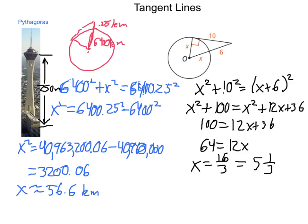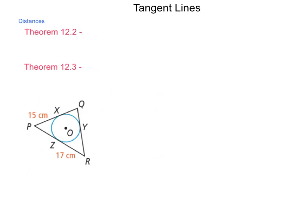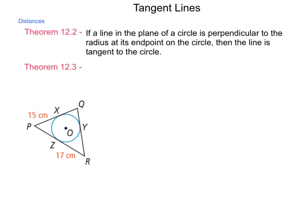Now along with the theorem we've already had, there are a couple others that come into play. Let's take a look at them. Theorem 12.2 states: if a line in the plane of a circle is perpendicular to the radius at its endpoint on the circle, then the line is tangent to the circle. This is that converse that we had spoken of, and we just used it in the last example that was worked out.